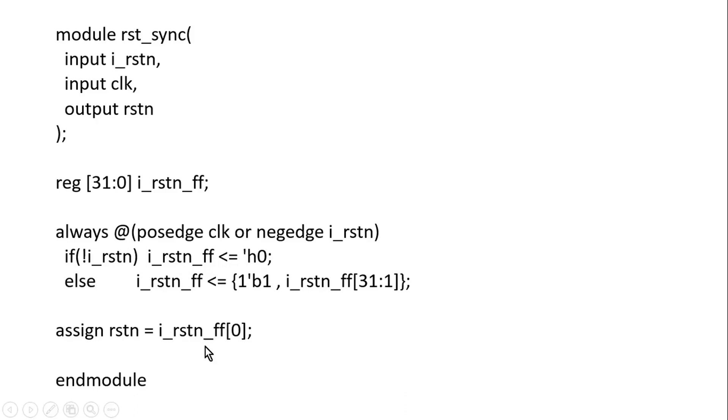And I'm applying the LSB of this register to the main design which is rstn. Else when reset is de-asserted, i_rstn_ff will be equal to concatenation of one—one is applied to the MSB as I have shown in the diagram also—and the remaining bits are shifted towards the LSB side. So 31 down to 1 bits are shifted towards the LSB side, that is 30 down to 0. Friends, this is how we write the RTL code of a reset synchronizer having capability to stretch the reset pulse.